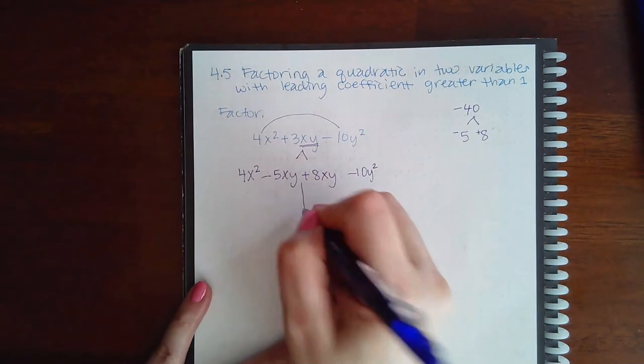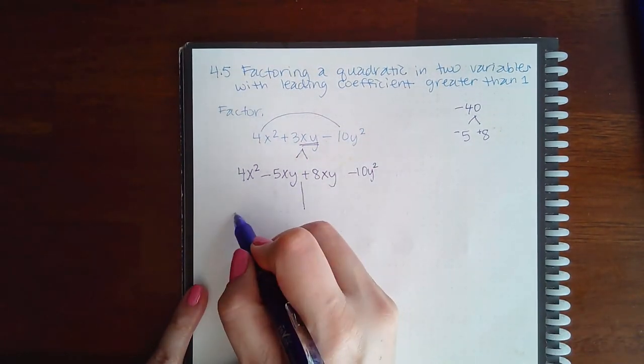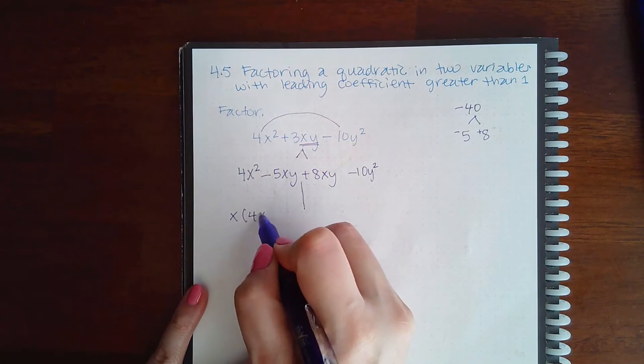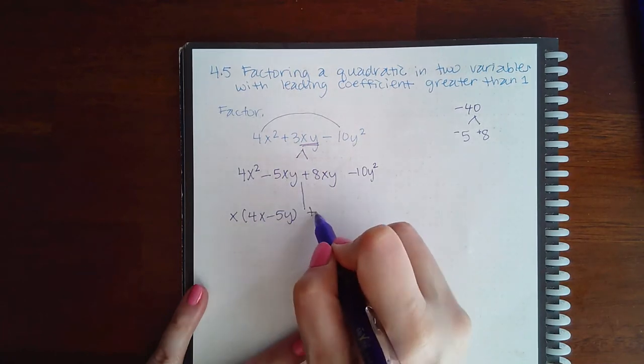Then from here, you factor by grouping as usual. So these two have an x in common, leaving me with 4x minus 5y. Bring down the plus sign.